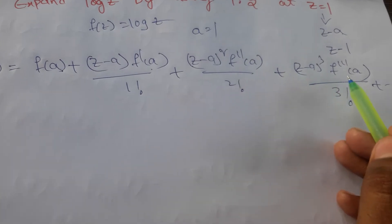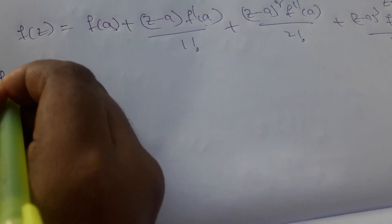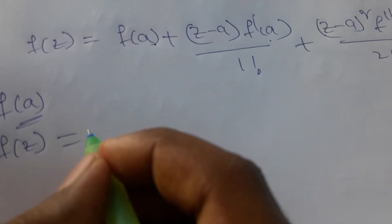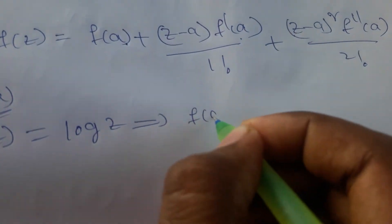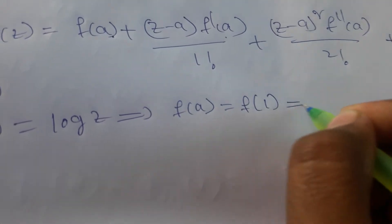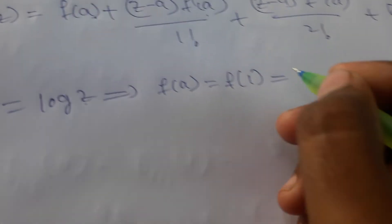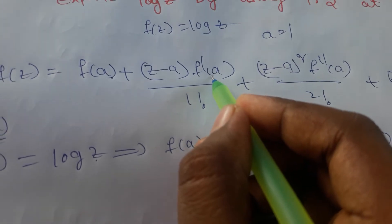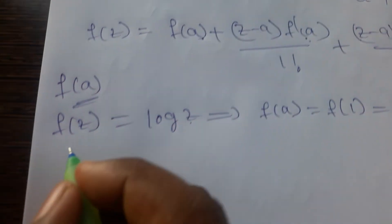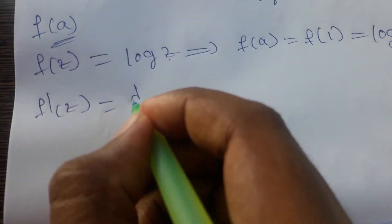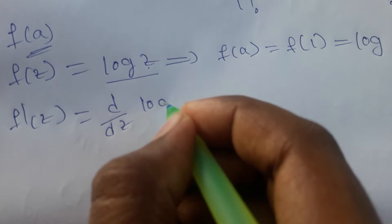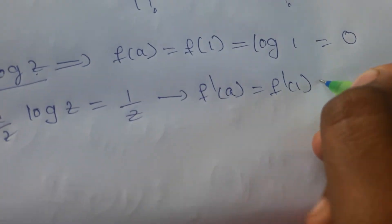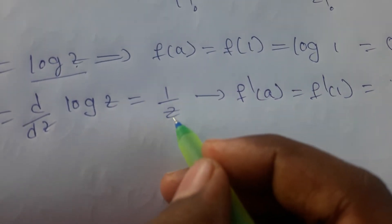To find f(a): since f(z) = log(z) and a=1, f(1) = log(1) = 0. To find f'(a): first find f'(z) = d/dz of log(z) = 1/z. Then f'(1) means substituting z=1, giving 1/1 = 1.